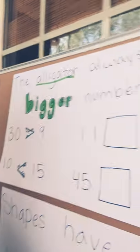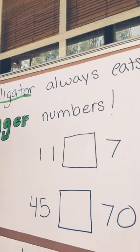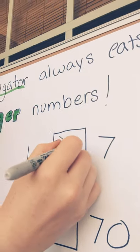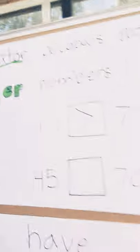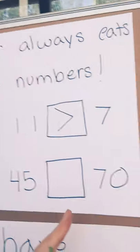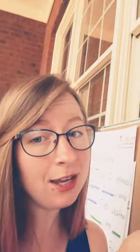Okay, so 11 and 7, which one will the alligator eat? If you said 11, ding, ding, ding, you got it. Alright, and down here, 45 and 70, which one will the alligator eat?